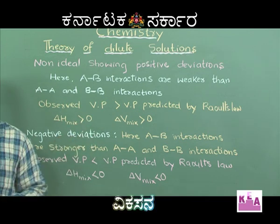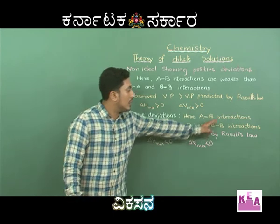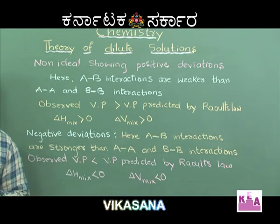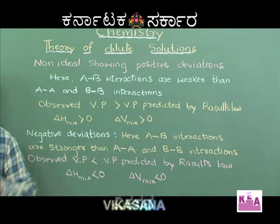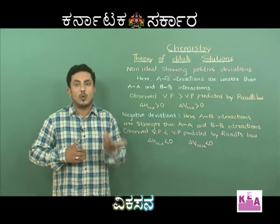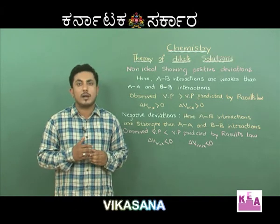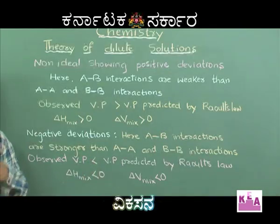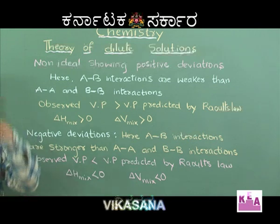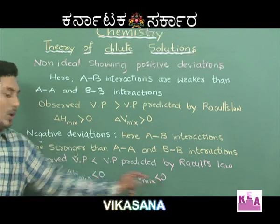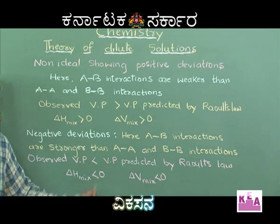In non-ideal solutions showing negative deviation, the A-B interactions are stronger than A-A and B-B interactions. Since the interactions are stronger, the escaping tendency of molecules decreases. As a result, the observed vapour pressure is less than the vapour pressure predicted by Raoult's law. The volume of the solution decreases, so delta V mixing < 0 and delta H mixing < 0.